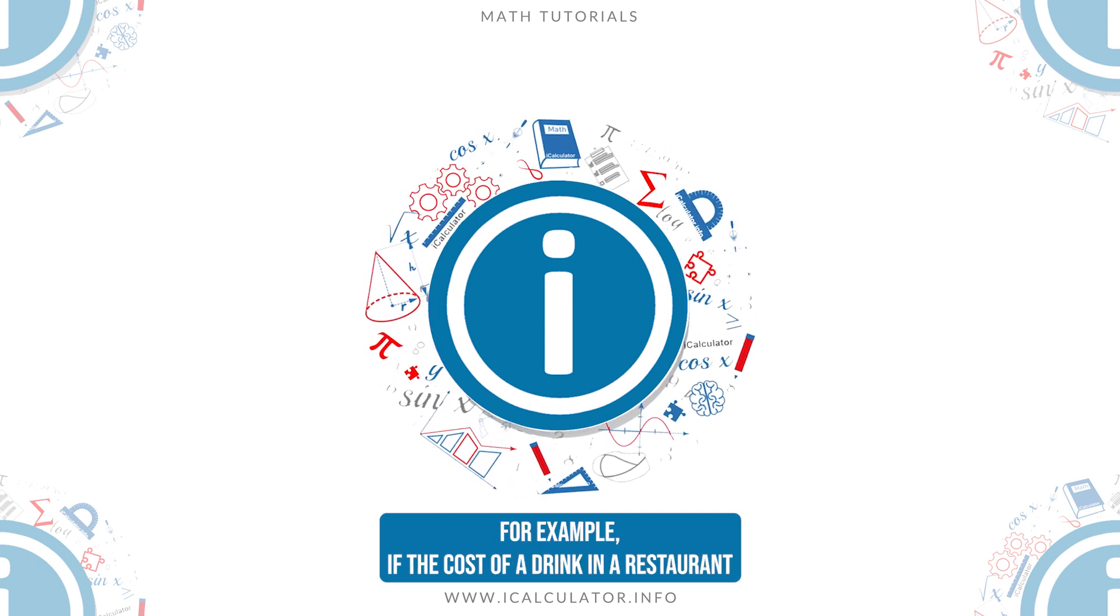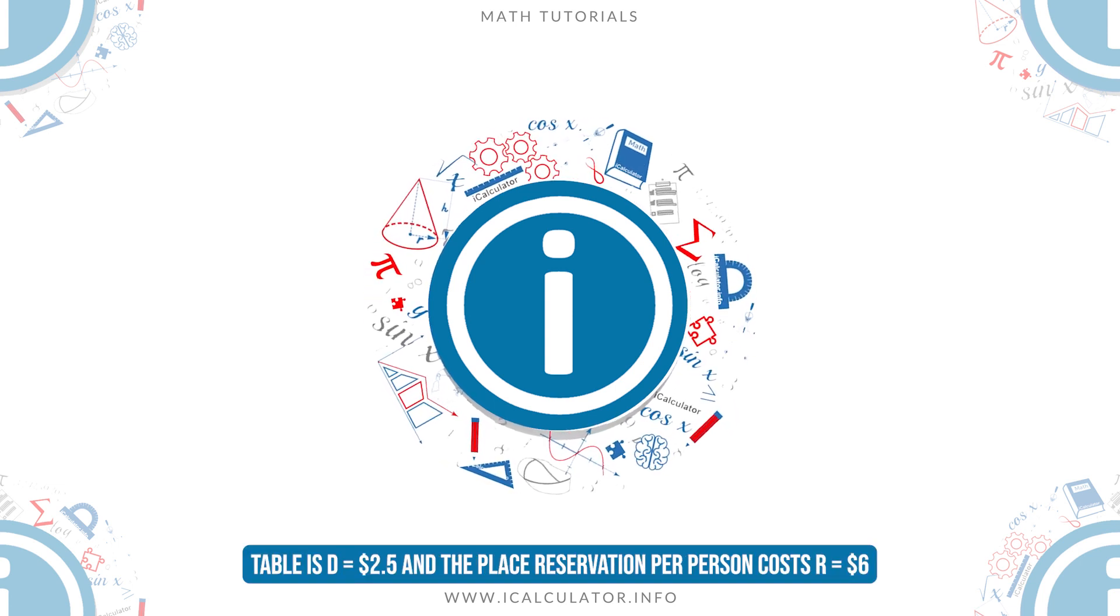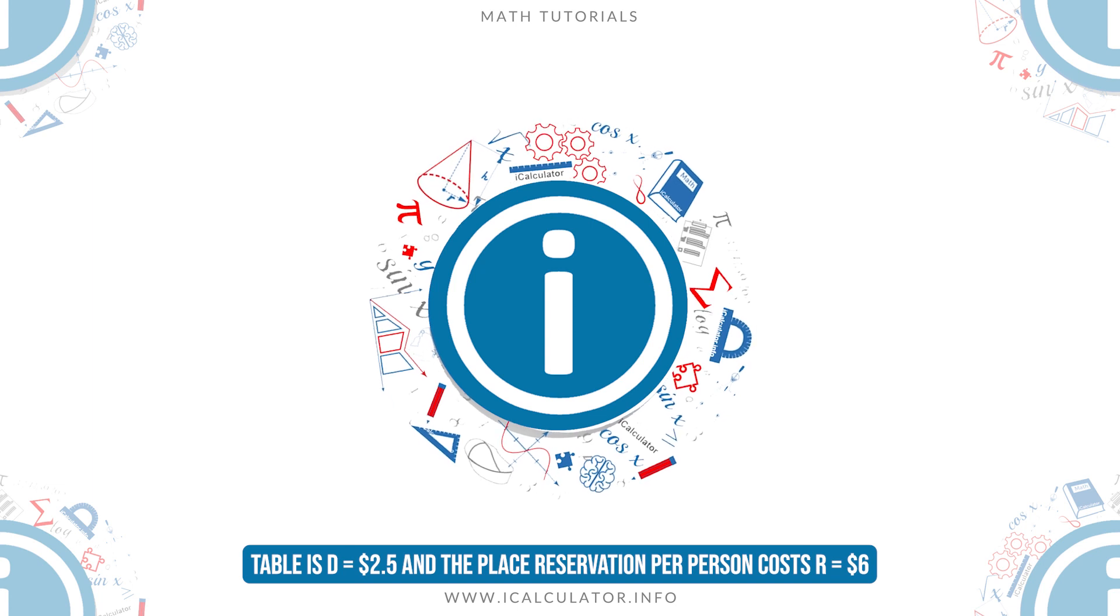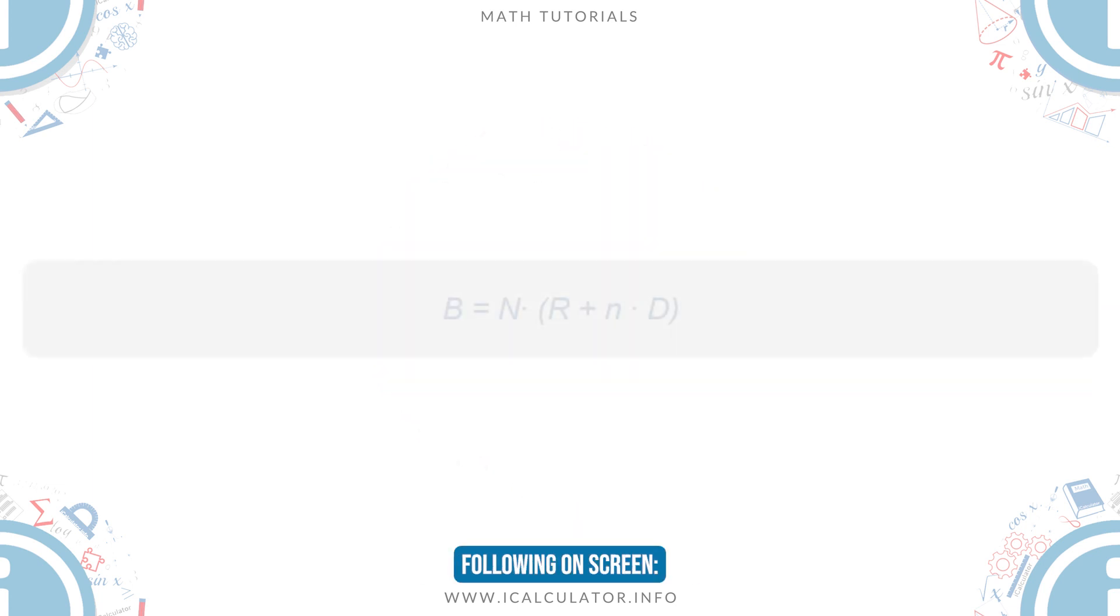For example, if the cost of a drink in a restaurant table is D equals $2.50, and the place reservation per person cost R equals $6, the bill B is calculated by the formula shown in the following on screen.